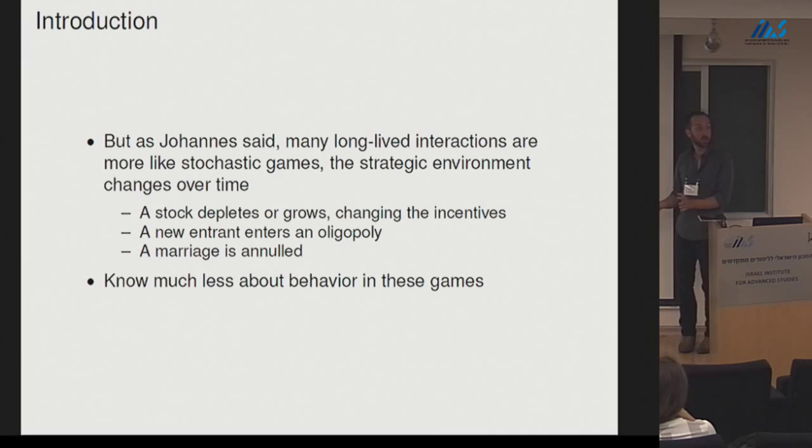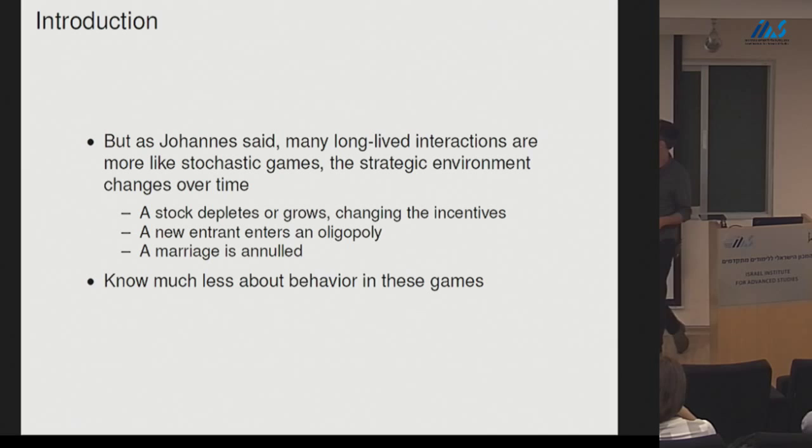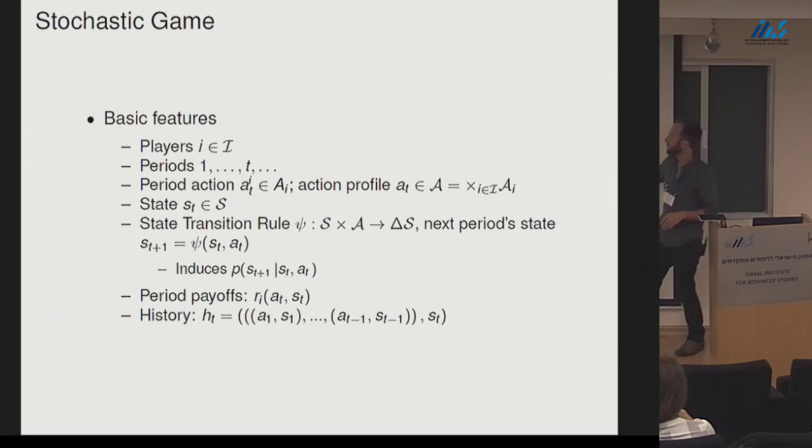We don't know much about behavior in stochastic games. Rather than Johannes' notation, I'm going to use a transition rule. Most of my games are going to have a deterministic transition rule — if you tell me the state today and the action today, I'll tell you a deterministic state. One or two treatments will have a stochastic transition rule. I'll call games with a deterministic rule dynamic games, and games with a stochastic rule stochastic games — this was Mailuth and Samuelson's distinction.